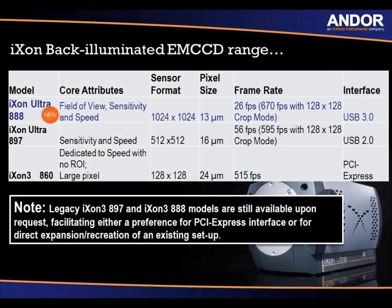In terms of EMCCD cameras, there are a few different sensors to choose from. The iXon Ultra 888 has a sensor format of 1024 by 1024 and reads out at 26 frames per second. You can also use crop mode — cropping the sensor down to a region of interest of 128 by 128 — to achieve 670 frames per second. It has 13-micron pixels for very high resolution and a USB 3 interface. This is Andor's newest EMCCD camera.